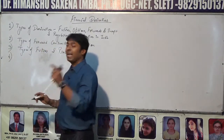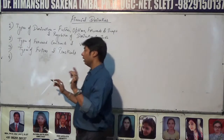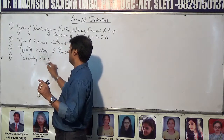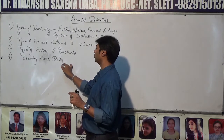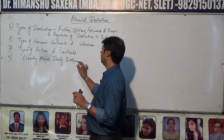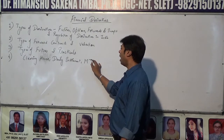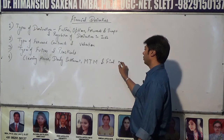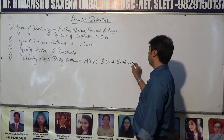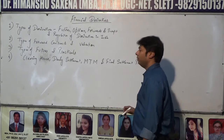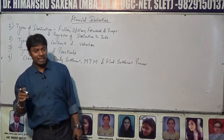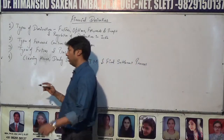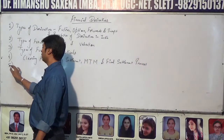Next is the clearing house and its functioning. The functions of the clearing house include the daily settlement process, mark-to-market margins, and ultimately the final settlement process. This is again an important topic in financial derivatives — functions of the clearing house, daily settlement, mark-to-market margins, and final settlement process.